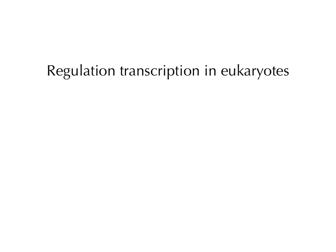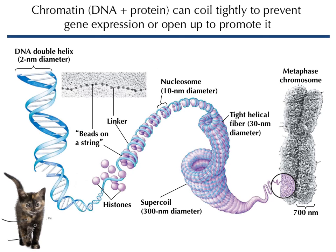In eukaryotes, gene expression has a lot more levels of control. Starting at the DNA level: the DNA double helix is coiled up into the cell nucleus — six feet of DNA in each cell. This happens via proteins called histones. The DNA wraps around those histones, then wraps around itself until, during mitosis or meiosis, it's condensed into a chromosome. Even when it's not, it's in a chromatin structure — chromatin is the DNA plus protein together.